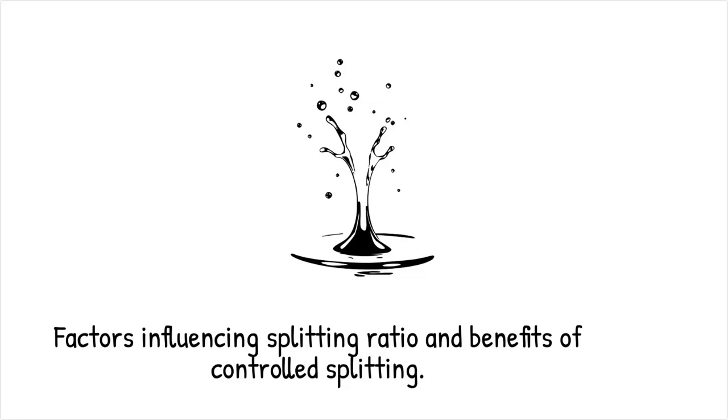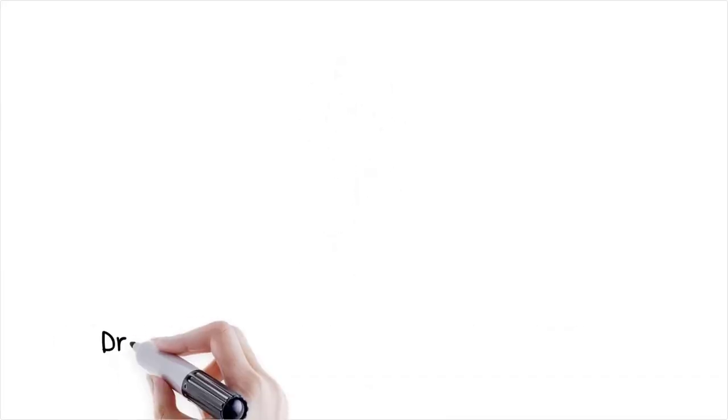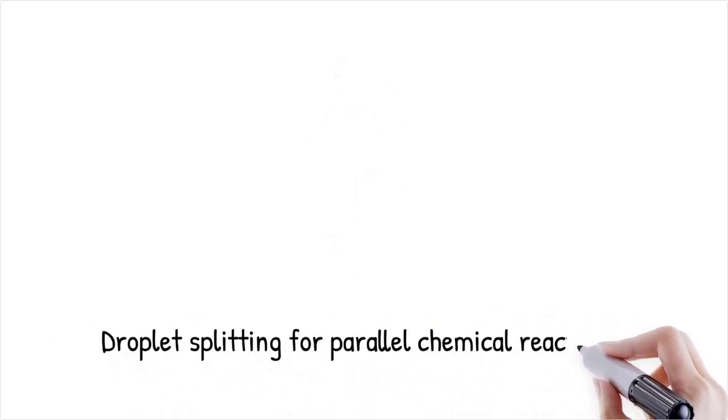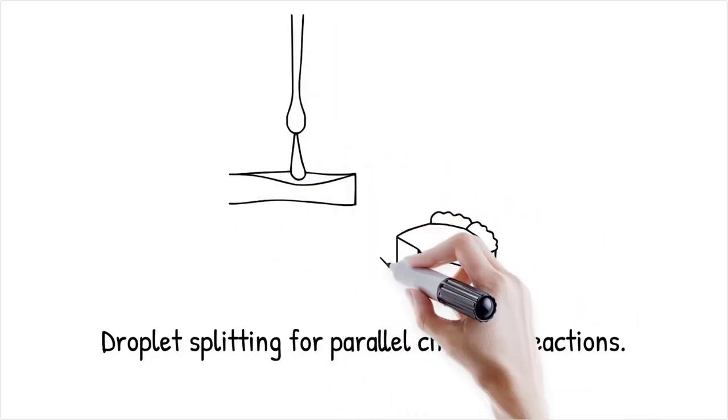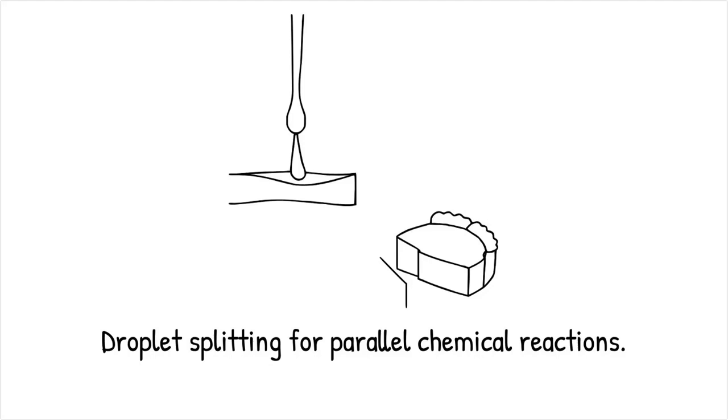A microfluidic device splits a 100-nanoliter droplet into four uniform 25-nanoliter droplets for parallel chemical reactions. Droplet splitting is like slicing a large pie into equal pieces so that each slice retains the same flavor and size.